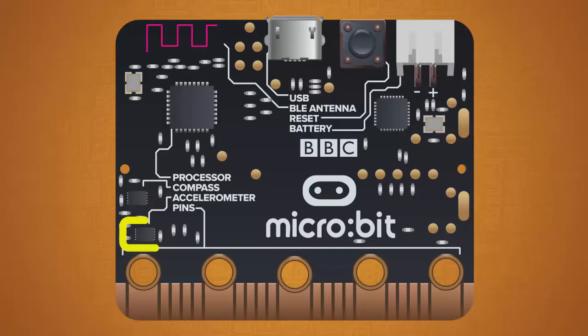Just next to the compass you'll see an accelerometer. This sensor detects the speed and motion of the micro:bit.